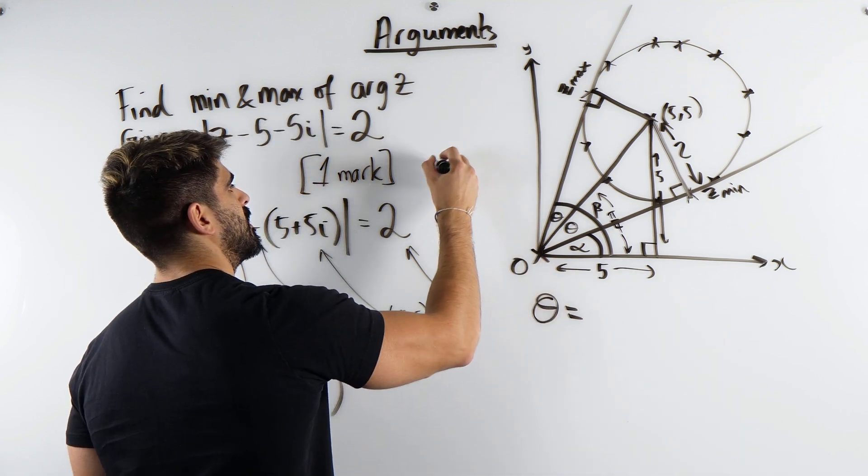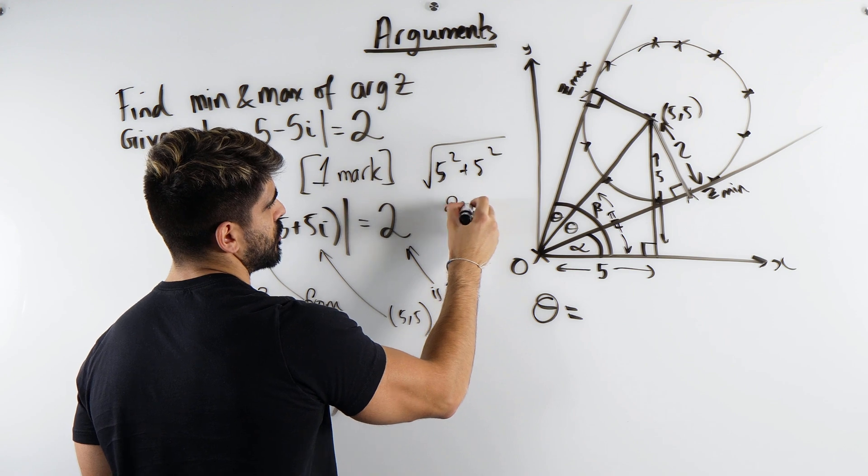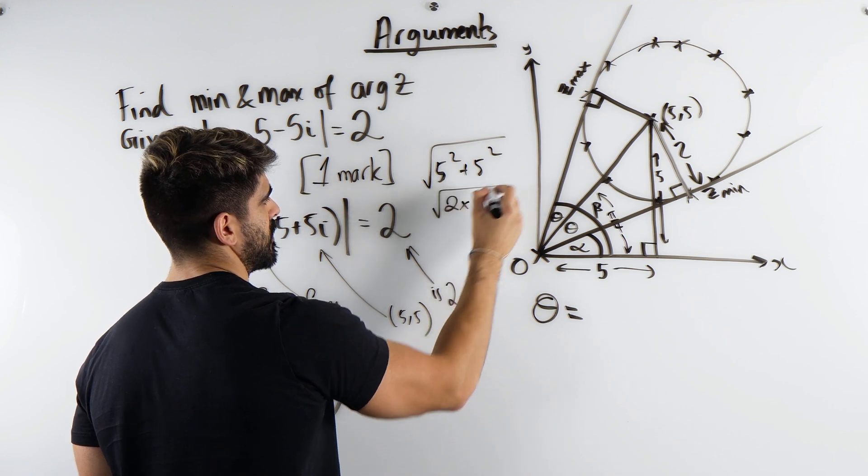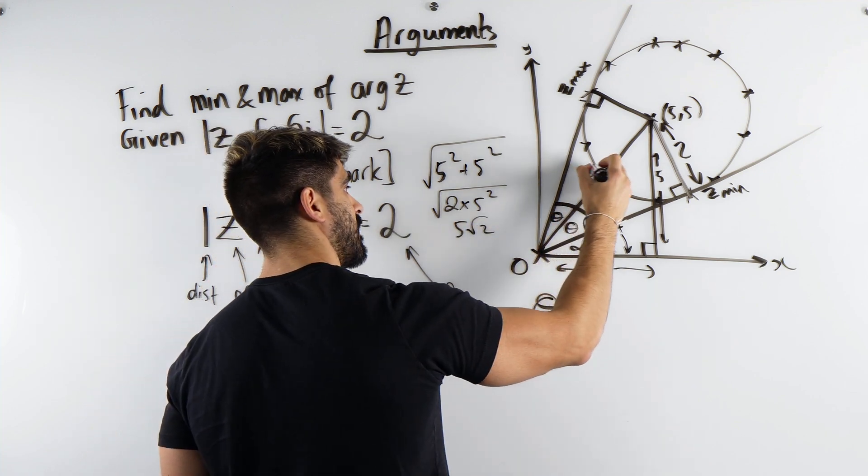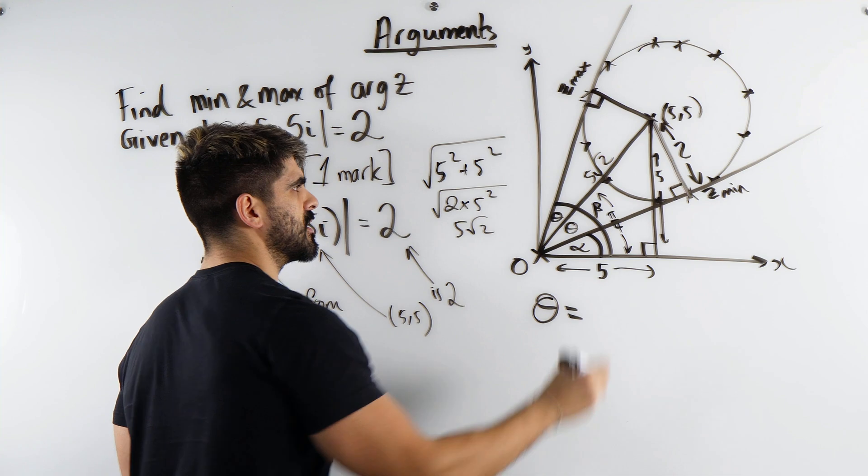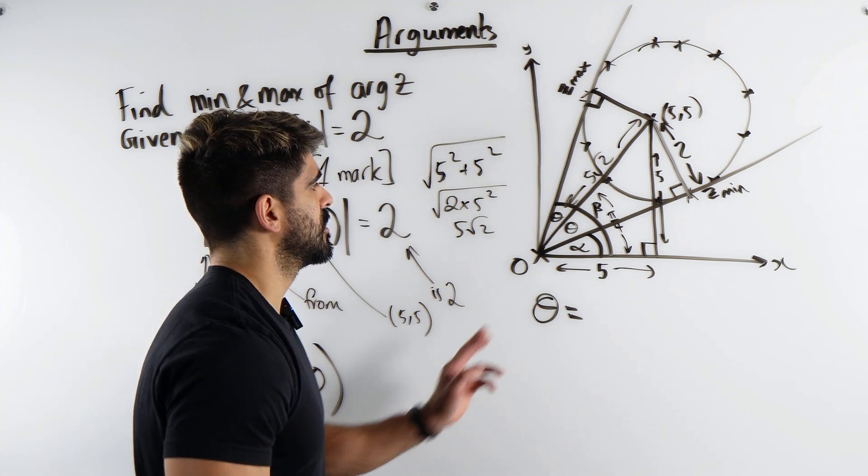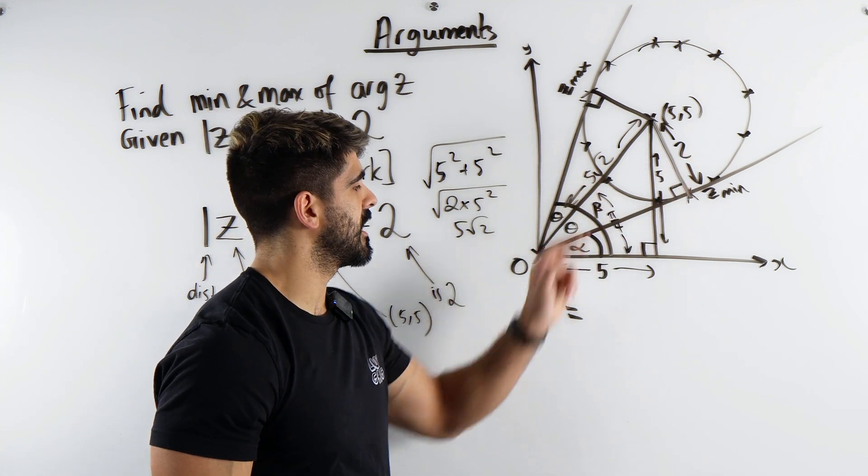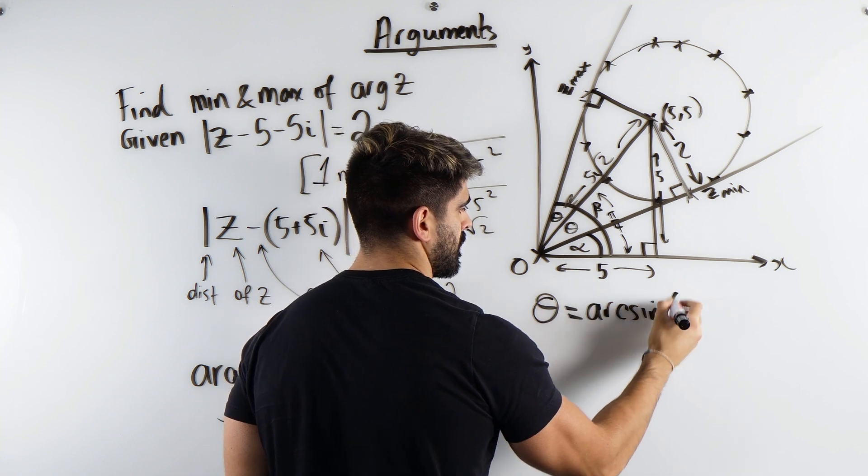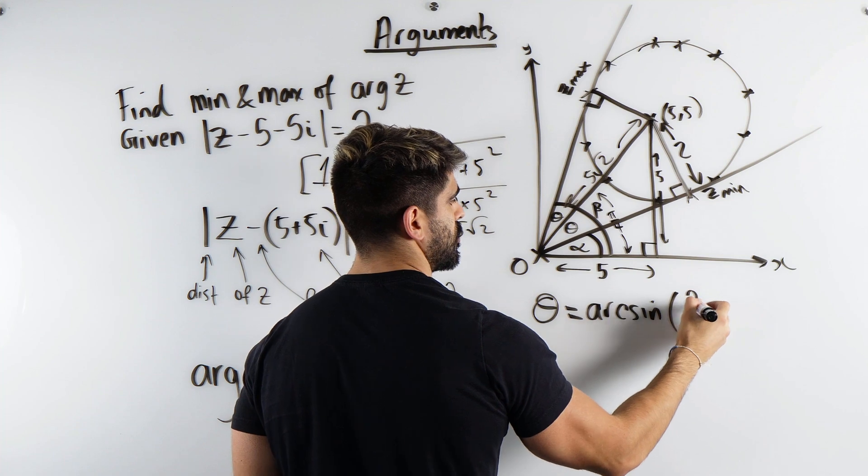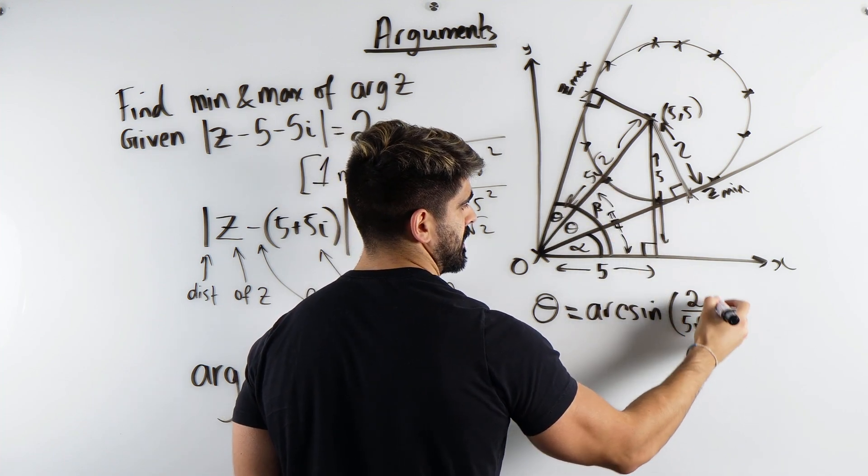Which I can show you. 5 squared, 5 squared, rooted. That is 2 lots of 5 squared. Which is root 5, 5 and then root the 2. So that's 5 root 2. Now a lot of the time in further maths they like you guys to keep it as an exact value. So this is the opposite and this is the hypotenuse. So it's going to be the inverse sine, arc sine, of the opposite which is 2 divided by the hypotenuse, 5 root 2.